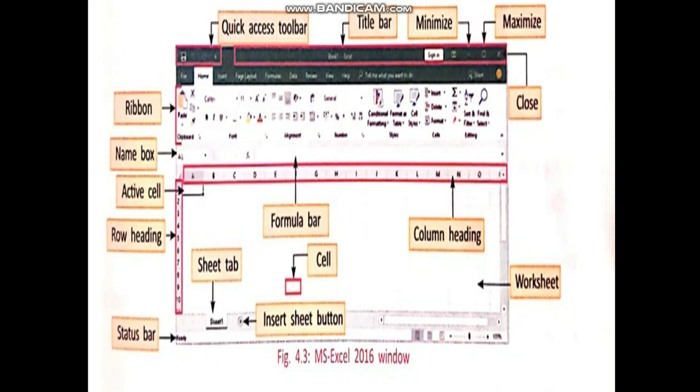Next one, active cell. The cell with the dark boundary around it is called the active cell. That is, the highlighted box. It is known as the cell pointer. Here you can click and type your words or letters.